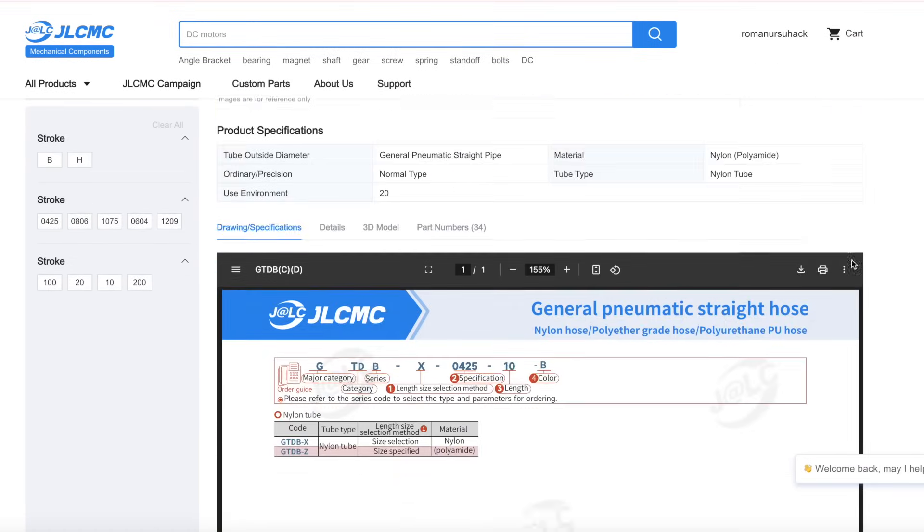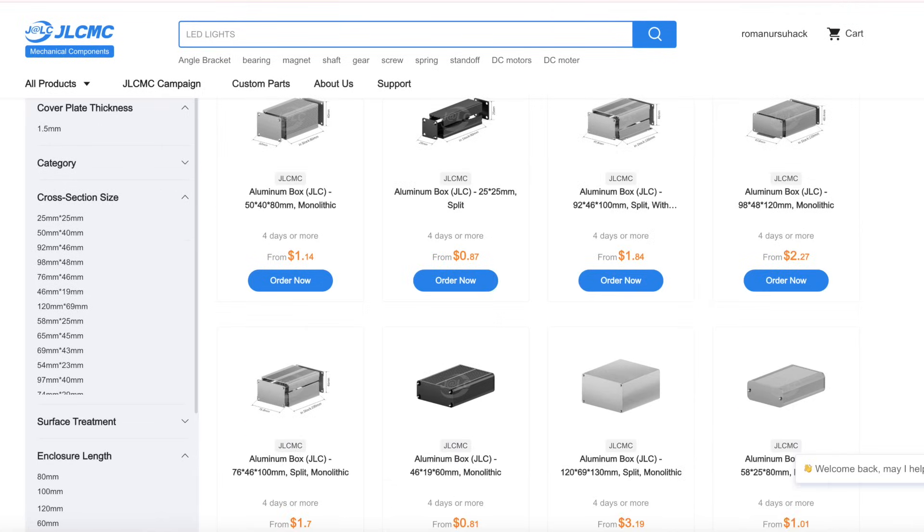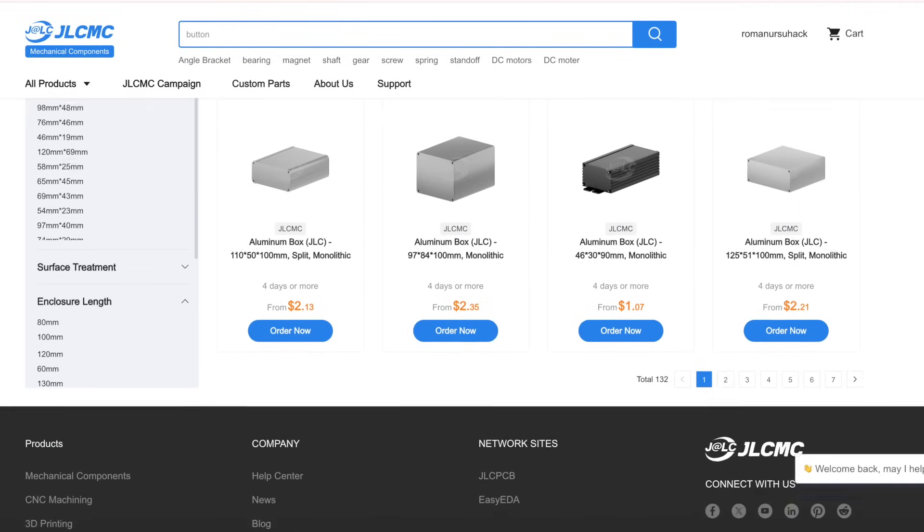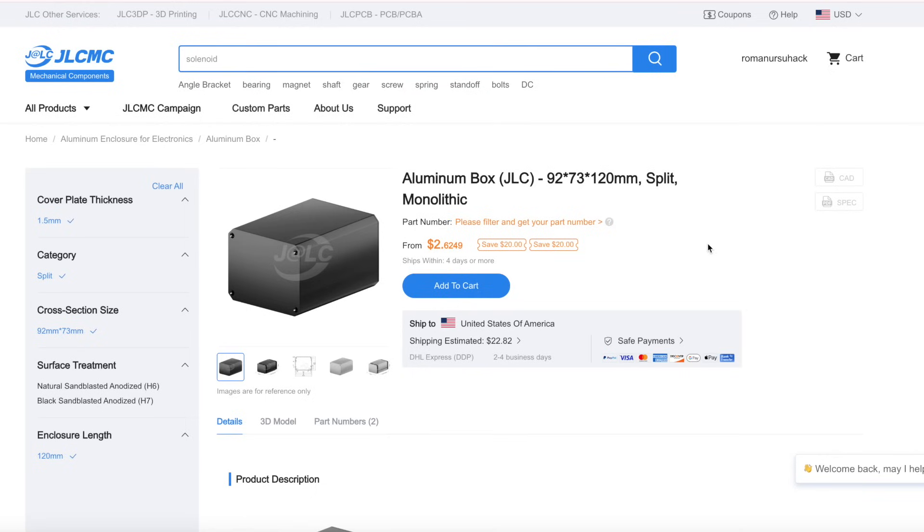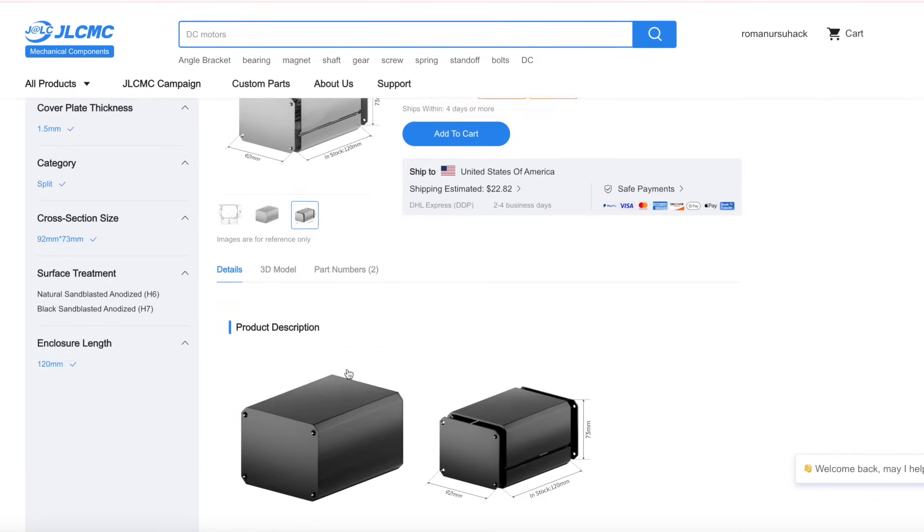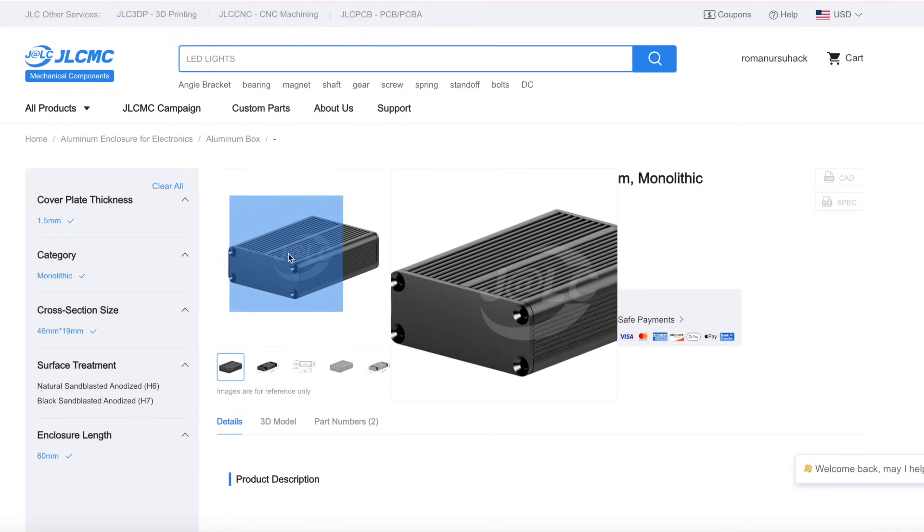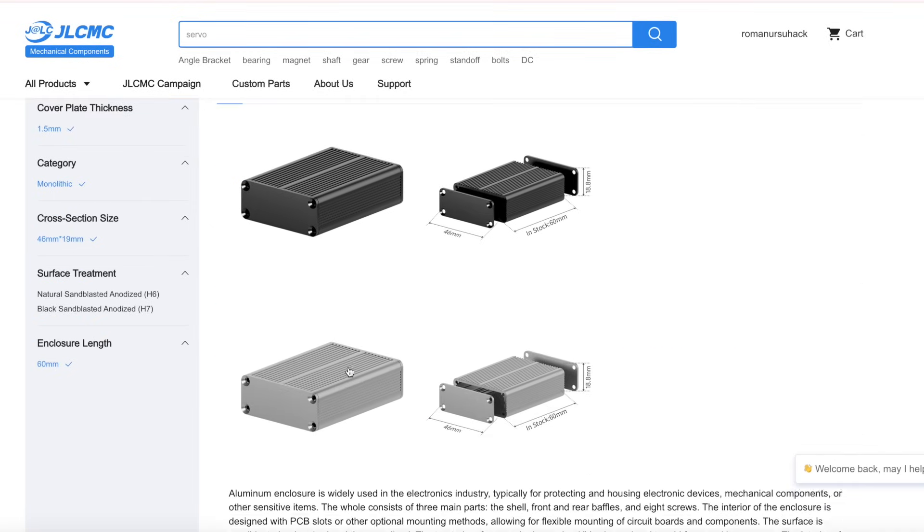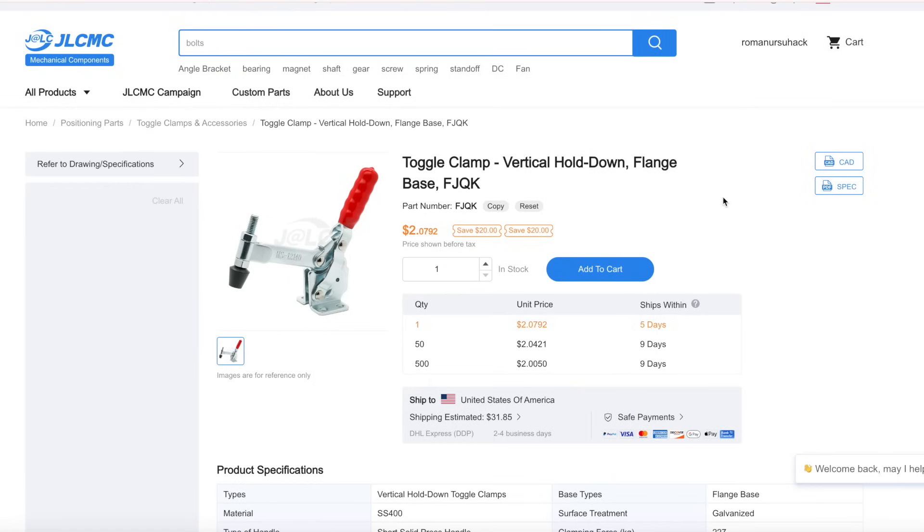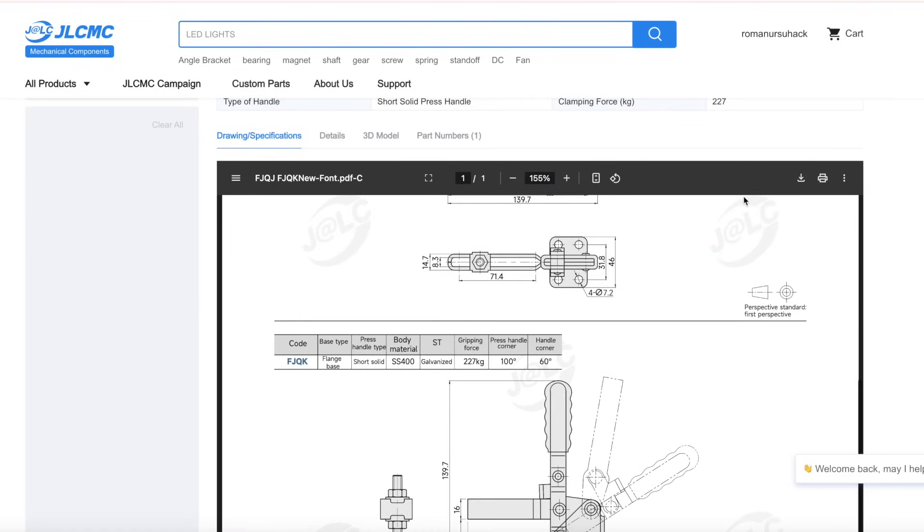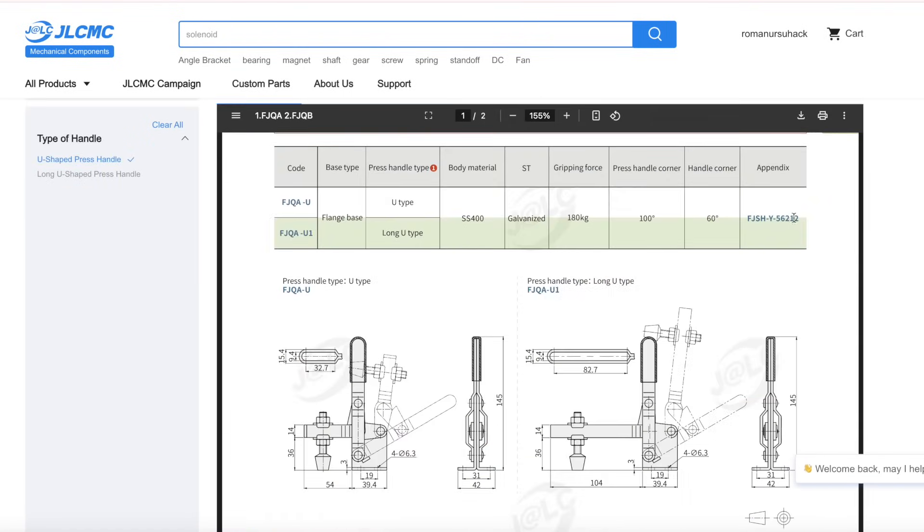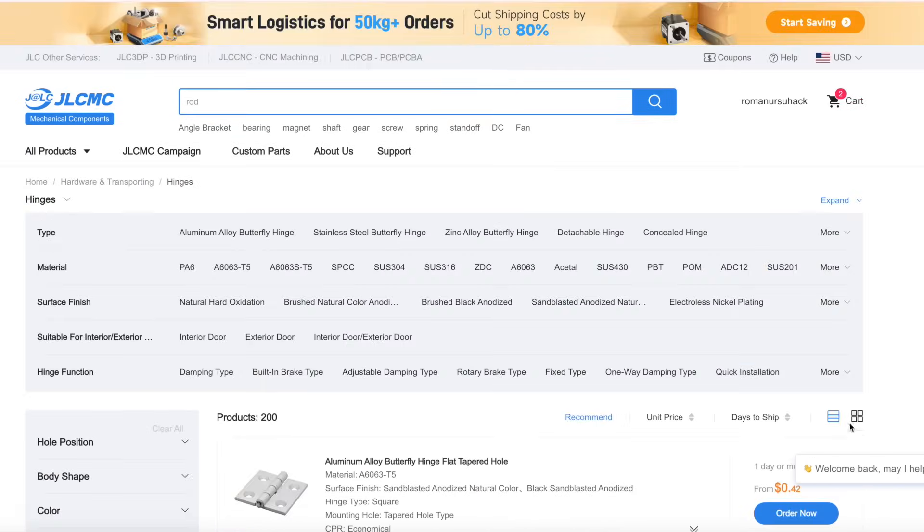JLCMC has a huge range of mechanical components, from basic fittings to high-precision parts. Whether you're a DIY enthusiast, an engineer, or part of a serious production team, you'll find exactly what you need. I especially recommend checking out their aluminum enclosures. Some are as cheap as 80 cents. And their clamps and brackets? I've ordered them multiple times. They're sturdy, reliable, and surprisingly affordable.